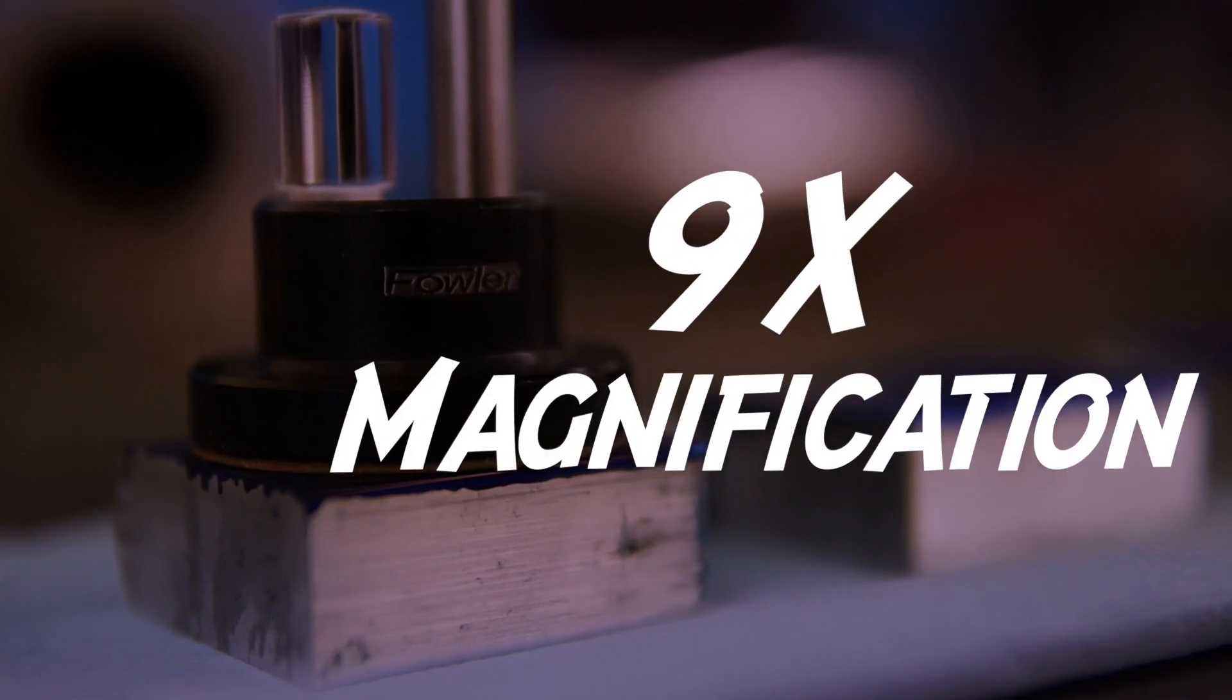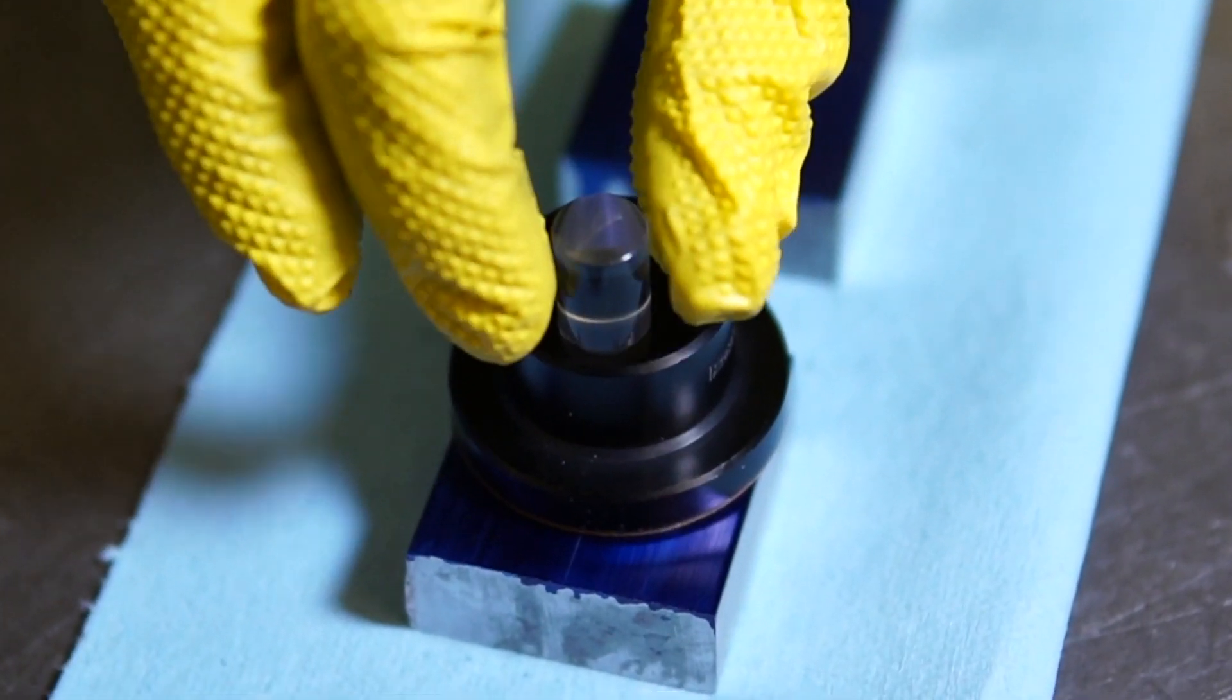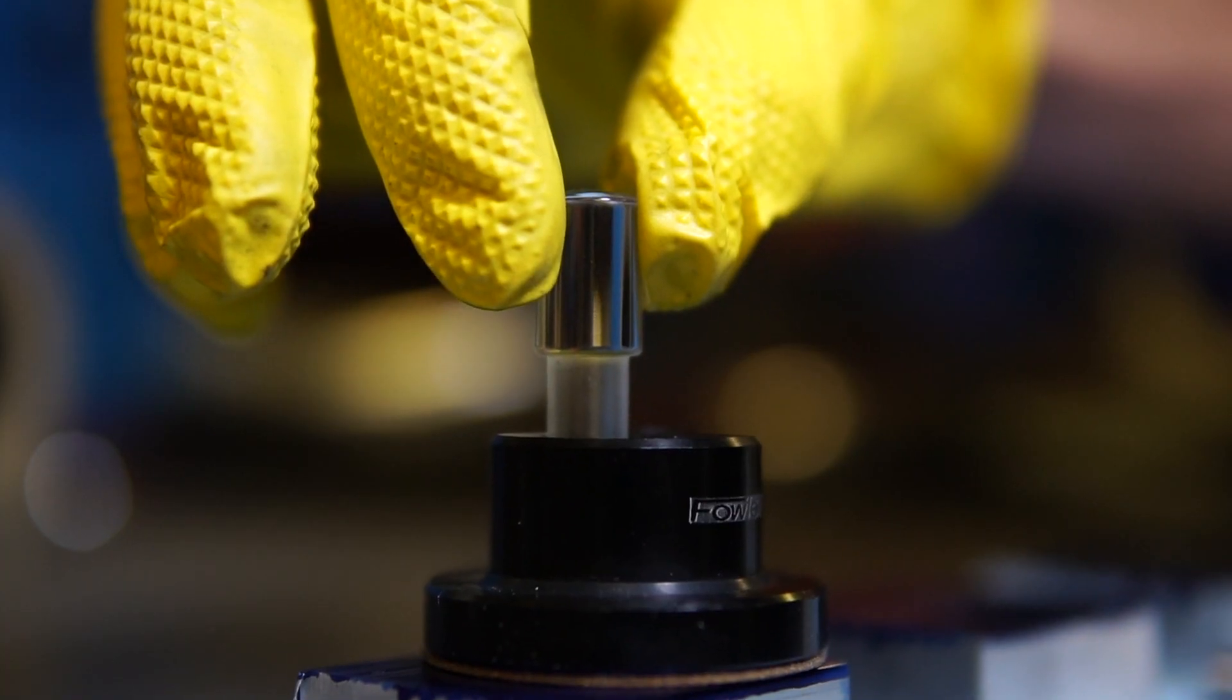This optical center punch has a precise bore that houses a sight glass with crosshairs for aligning your scribe lines. All you have to do after alignment is swap the sight glass out for the steel punch and give it a little tap.